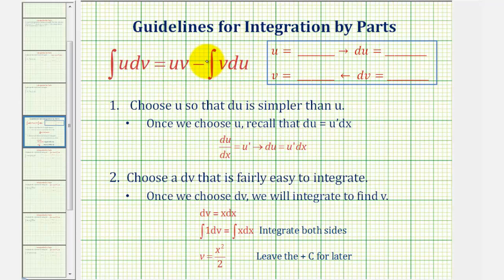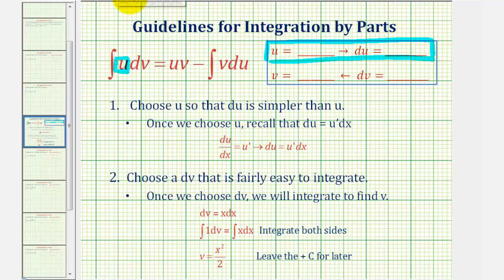So the idea is we'll let part of the integrand be equal to u. Once we identify u, we'll find differential u by differentiating. The remaining part of the integrand must be dv. So once we identify dv, we'll integrate in order to find v.